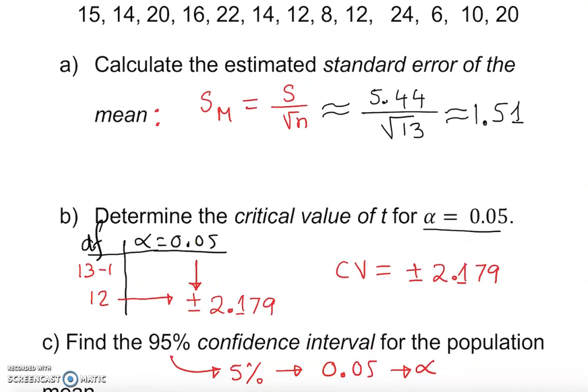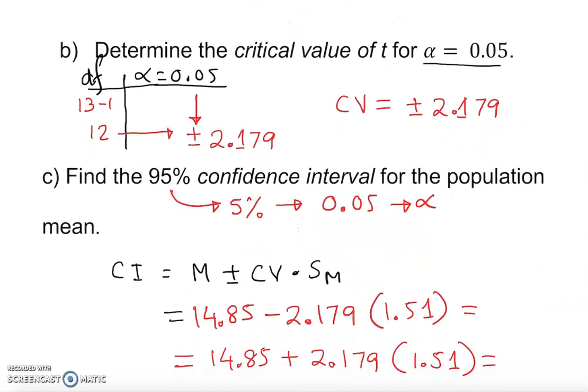Part A is giving me the standard error of the mean, part B is giving me critical value. We just plug it in basically. Only one extra thing here, we have to look up sample mean from the calculator, that's all.